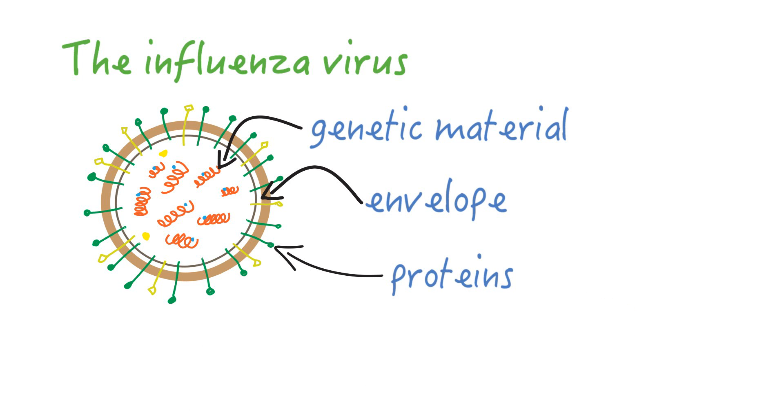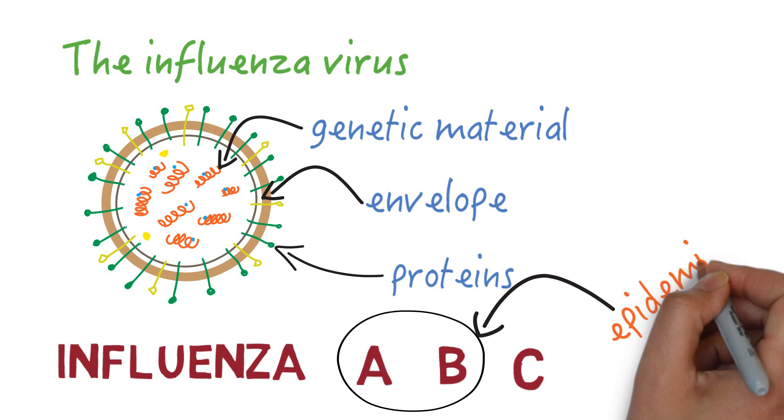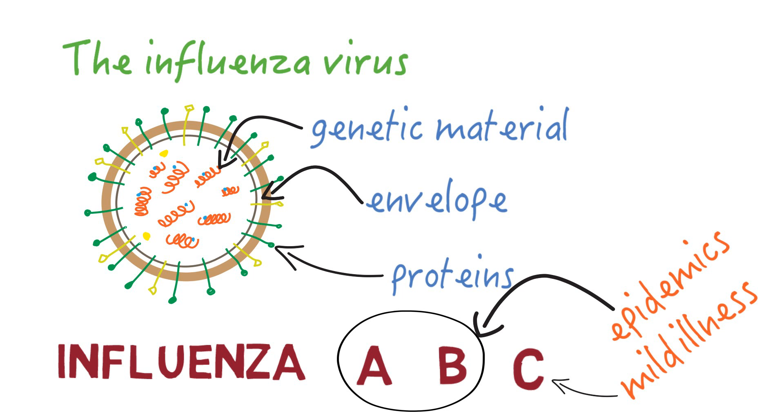The outer proteins help the virus attach and enter into cells. There are three main types of influenza virus based on the types of proteins it has: A, B and C. A and B cause epidemics, whereas C is not known to and only causes mild illness.